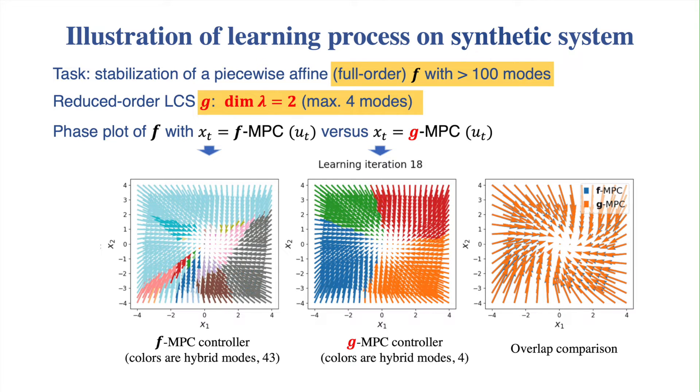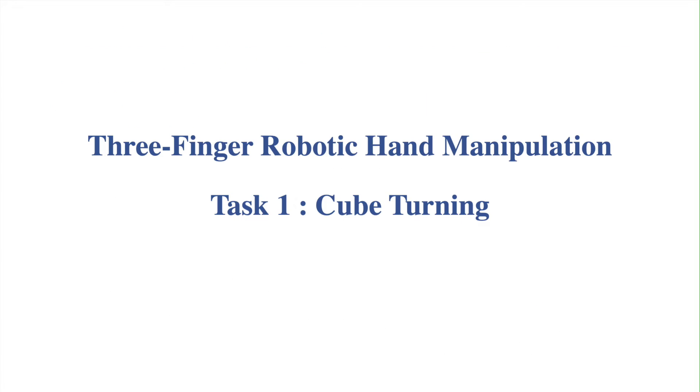The first panel shows the phase plot of the system with the full-order MPC controller. The middle panel shows the phase plot for the reduced-order LCS MPC controller at different learning iterations. It contains only 4 modes, and these 4 modes will eventually capture the important modes in the first panel. The comparison of these two phase plots shows convergent control performance of the reduced-order MPC controller.